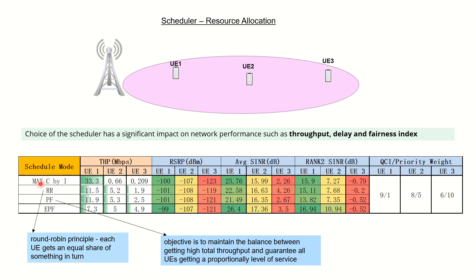The first mode is Max C/I, which considers quality as the parameter to allocate more resources. Weightage is given to quality, so whichever user has a better SNR will be given the maximum number of resources. The drawback is that User 2 and User 3 would not get sufficient resources, and their throughput in this case is really poor.